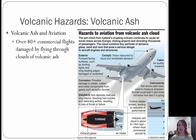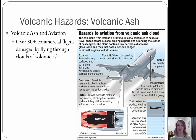Next volcanic hazard is volcanic ash. Over 80-plus commercial flights are damaged by flying through clouds of volcanic ash each year. With all the volcanoes in Iceland erupting, this has been more in the news lately. This diagram shows different hazards to aviation from volcanic clouds and all the different things it can affect.